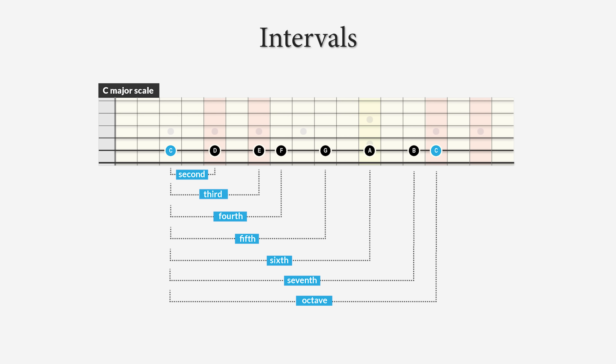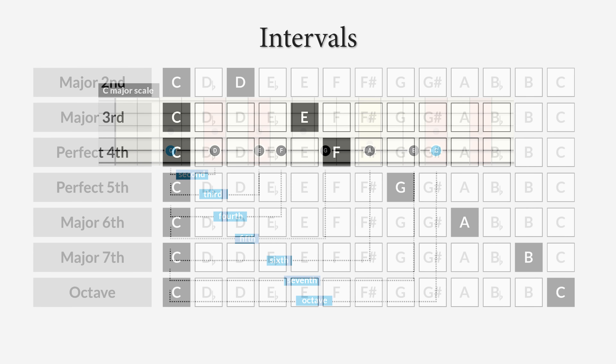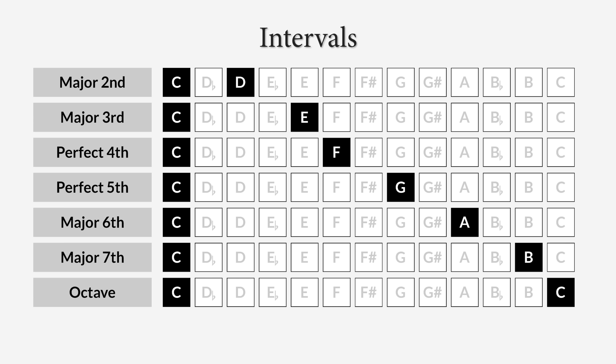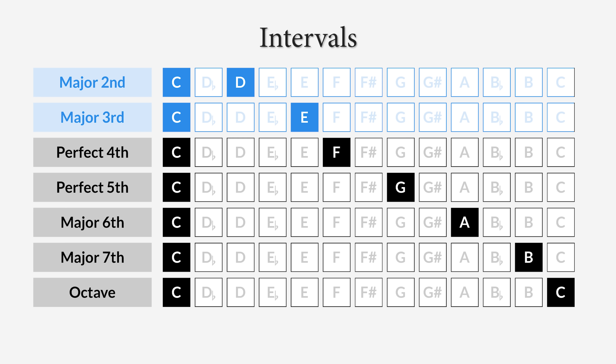As you may or may not know, the distances between the notes are called intervals. Every interval has its own name and distance, and you can see that in this graphic. You see the narrower intervals up to the 4th, like the 2nd, the 3rd, and the 4th itself.